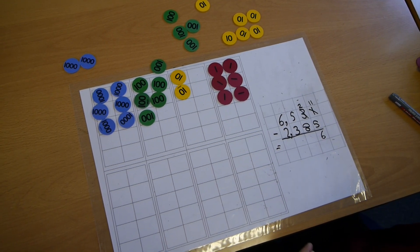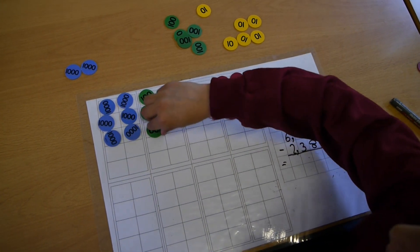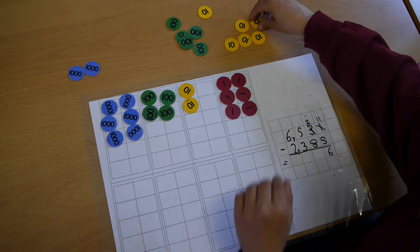Now for the 20 we still don't have enough again. So we need to take away, exchange 100 for 10 tens.